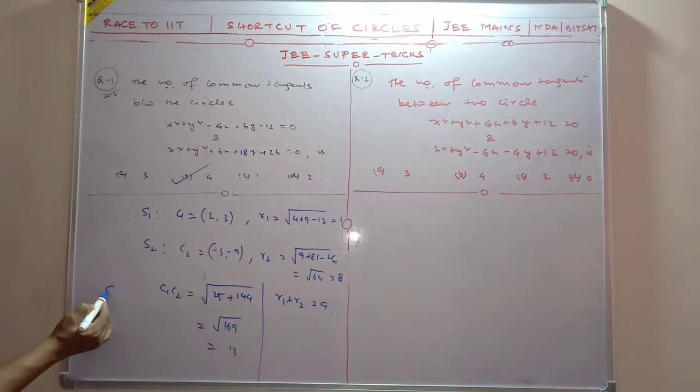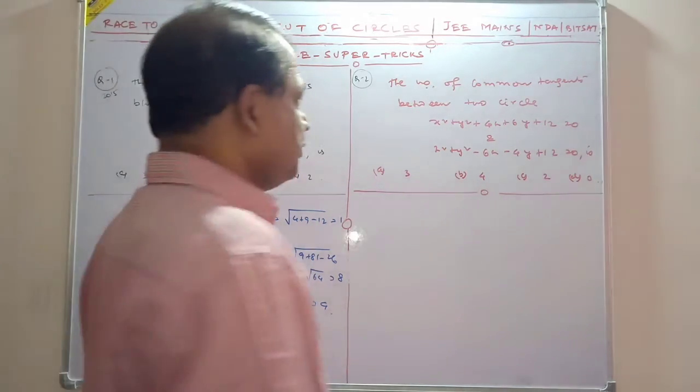So this is greater. Number of common tangents: C1C2 is greater than R1 plus R2. So in this case, the number of common tangents is 4.